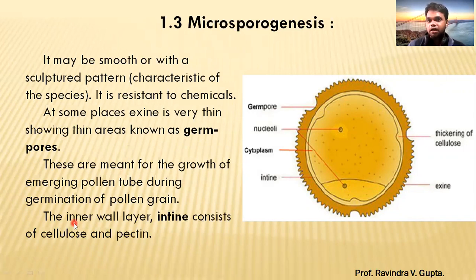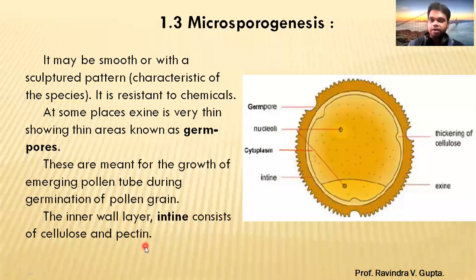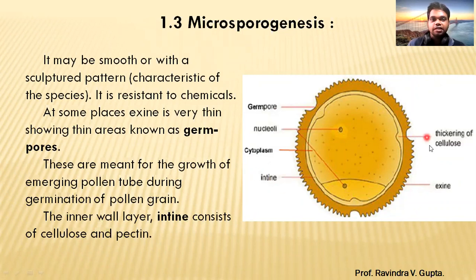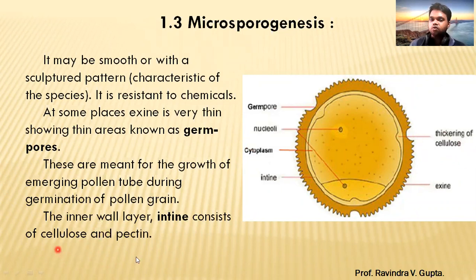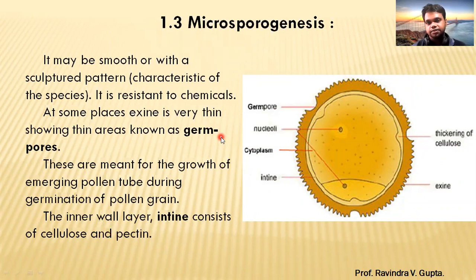The inner wall layer is called intine, and it consists of cellulose and pectin. After the exine, the inner thin wall is the intine. Its content is the presence of cellulose and pectin. This is all about 1.3 Microsporogenesis.